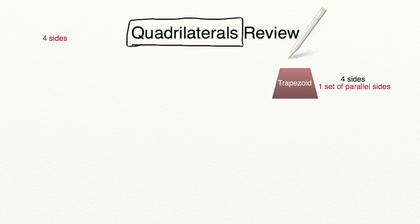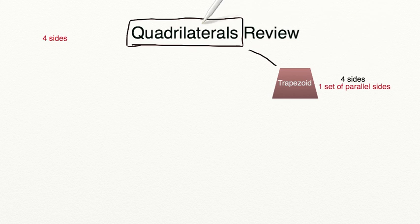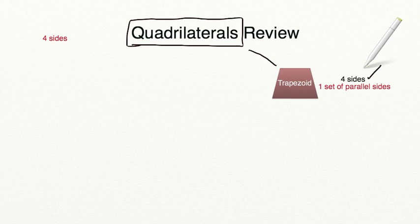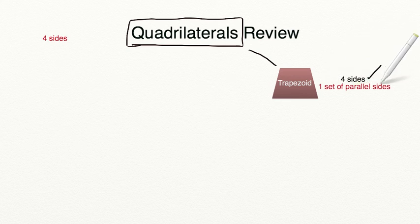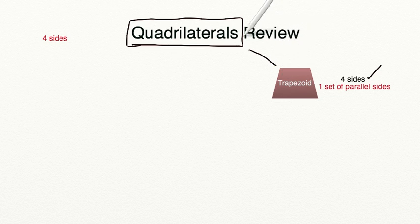We are going to start with a trapezoid. A trapezoid is right below quadrilaterals on our diagram. A trapezoid meets the expectation of a quadrilateral — it has four sides — but it's more specific than that. It also must have one set of parallel sides. Since we have trapezoid below quadrilateral, it is in fact a quadrilateral and it's more specific as well.